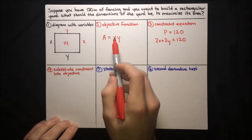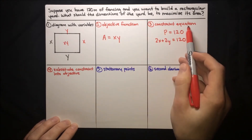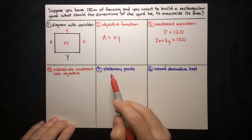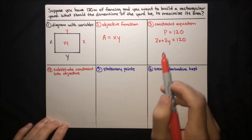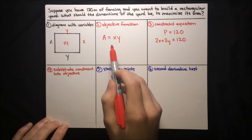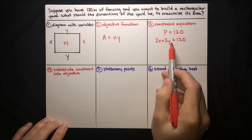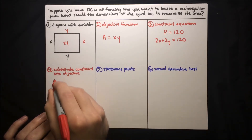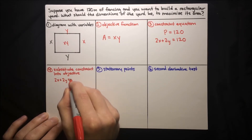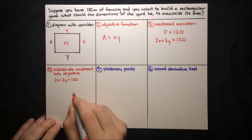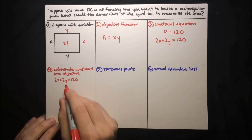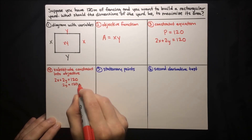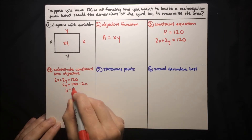We're trying to maximize this objective function subject to this constraint equation. Right now we've got two different things — a function and a constraint equation — and we want to combine them into a single function that we can maximize. The way we do this is we substitute the constraint equation into the objective function. We solve the constraint equation for one of the variables, then plug it into the objective function. Starting with 2x plus 2y equals 120, let's solve for y: subtract 2x to get 2y equals 120 minus 2x, then divide by 2 to get y equals 60 minus x.